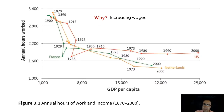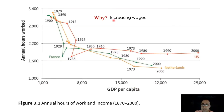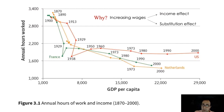The answer is increasing wages. Obviously, we know the relationship between increasing wages and GDP per capita — as wages rose, people became richer. But what's the relationship between increasing wages and total annual hours worked? To understand that, we need to know about the income effect and the substitution effect.